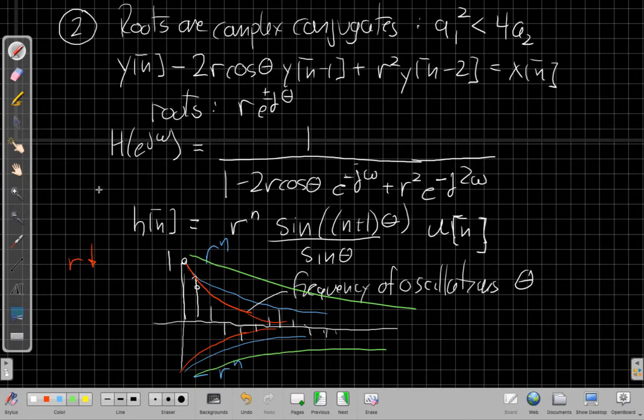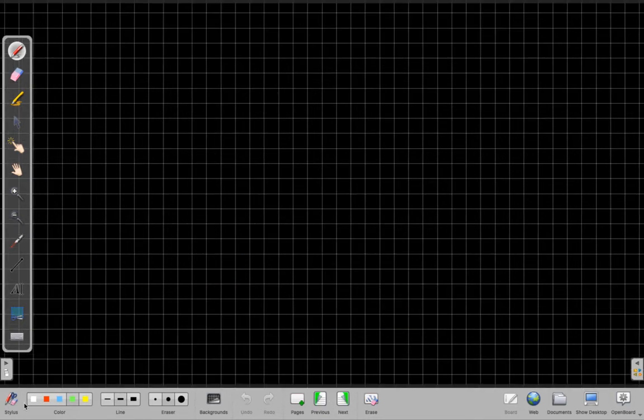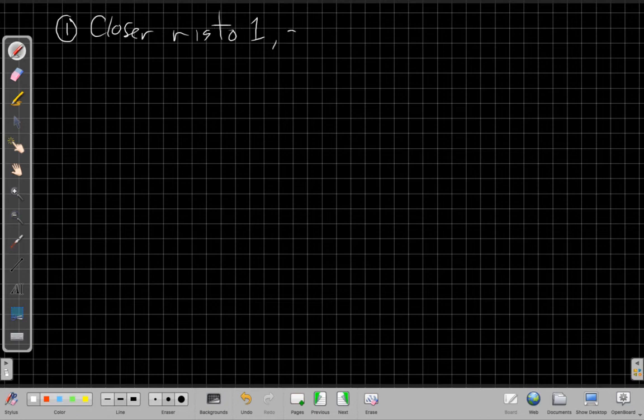Right, so maybe that's important enough though. Write that on the slide before we wrap up here and go on to the next page. So one important point here is the closer r is to 1, the slower the envelope, the slower the oscillations decay away.